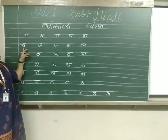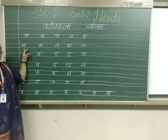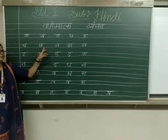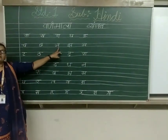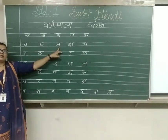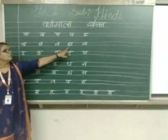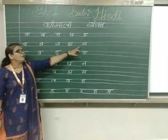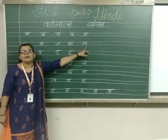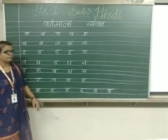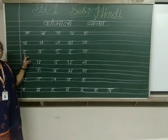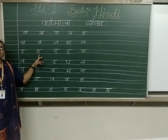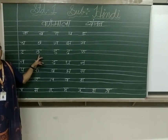च से चम्मच, छ से छतरी, ज से जहाज, झ से झंडा. Iya khani. ट से टमाटर, ठ से ठेला.